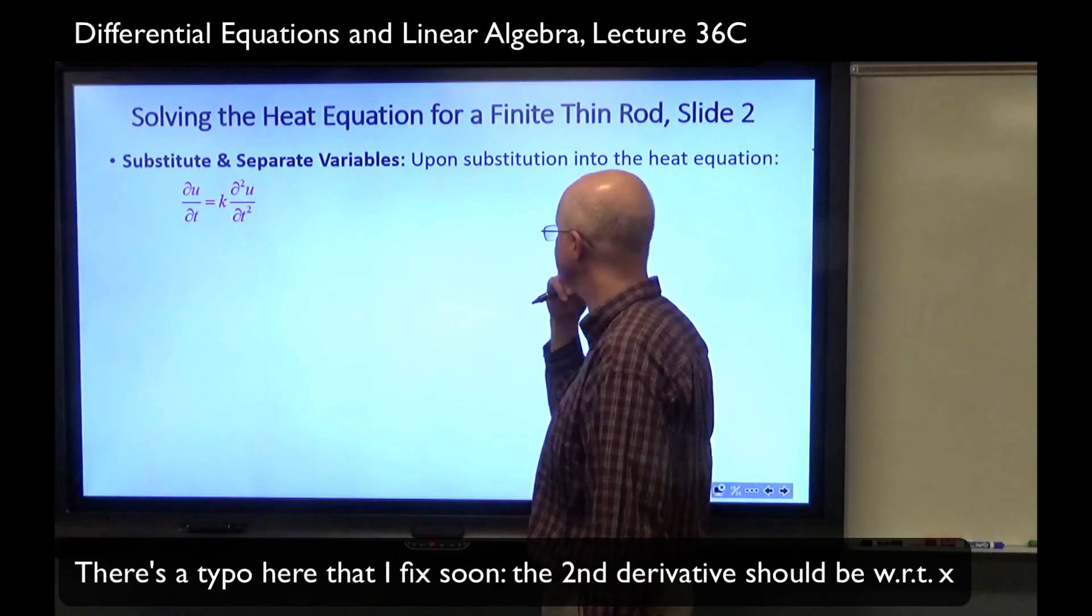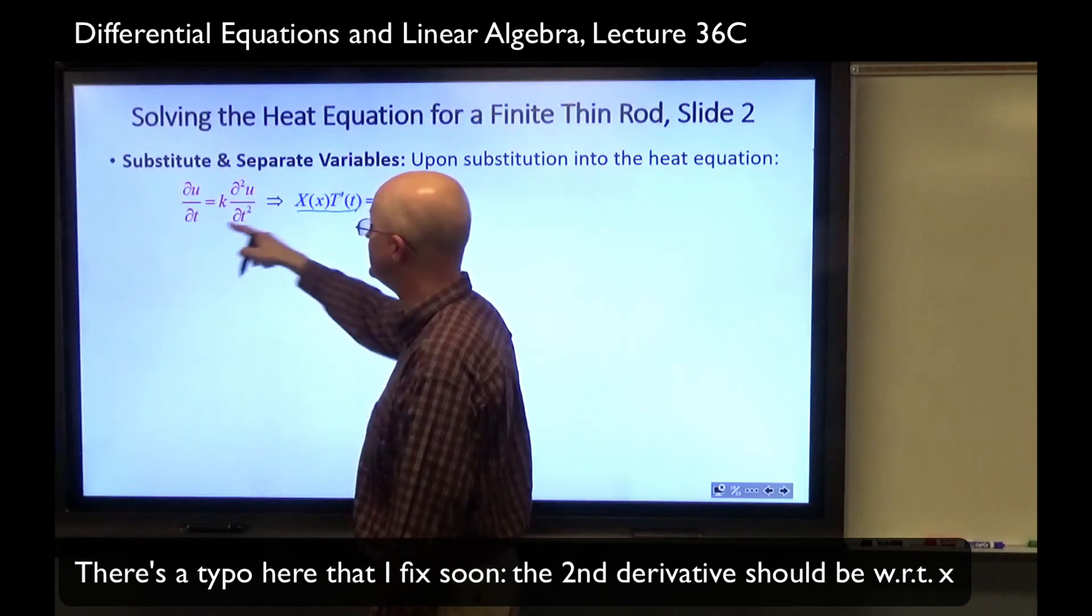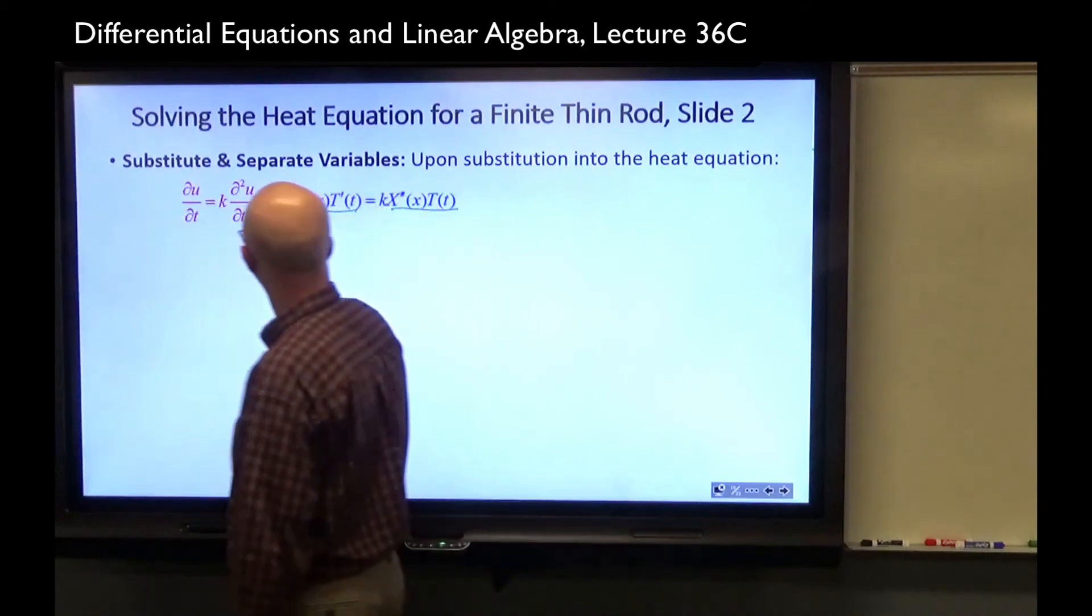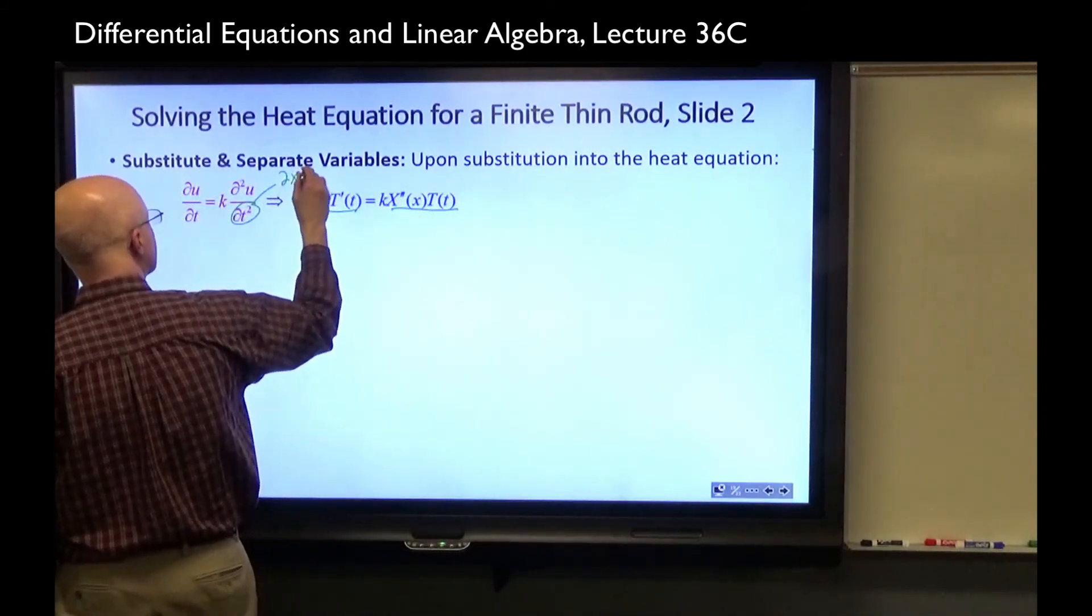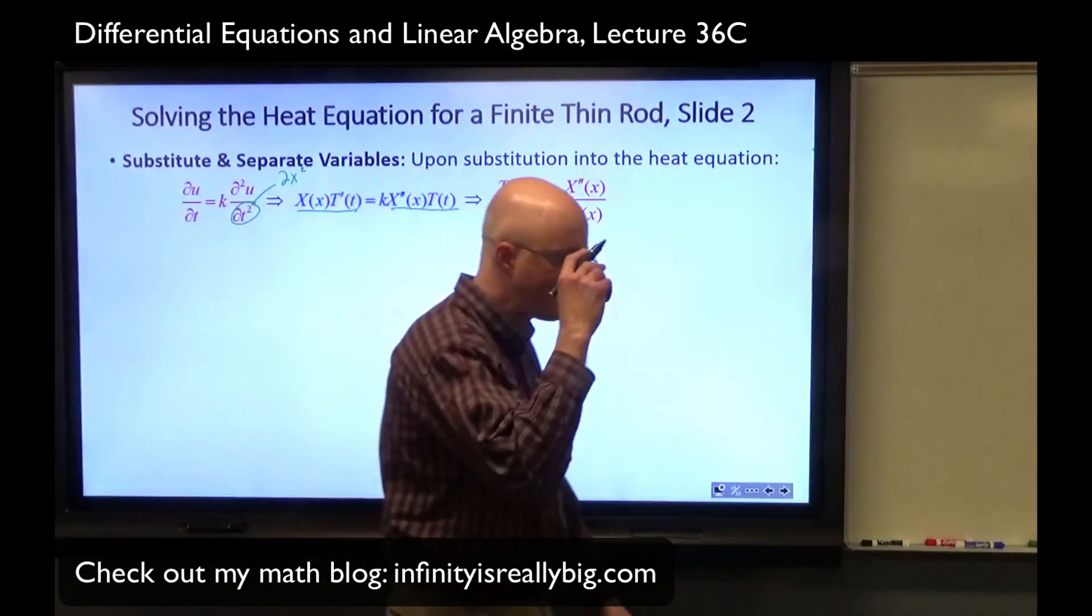Now we substitute and separate variables. Substitute into the heat equation. There's the heat equation, where k is an arbitrary positive parameter related to the diffusivity of the medium, of the bar metal, like what kind of metal is it? Plug in those derivatives from the previous slide. There's du/dt. There's the second derivative of u with respect to x twice. What do we do with this? You could divide both sides by capital T of little t, and divide both sides by capital X of little x.